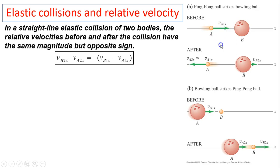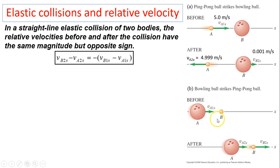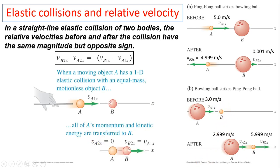Let's revisit the ping pong ball and bowling ball example. Before collision, suppose the ping pong ball moves at 5 m/s. After, it comes back at almost 5 m/s, and the bowling ball moves at a very small velocity. Relative velocity before is 5 relative to B; after, A moves to the left at approximately 5, so 4.999 plus 0.001 equals 5 — the relative velocity after is the same magnitude. If the bowling ball strikes the ping pong ball at 3 m/s, the relative velocity is still 3 relative to the ping pong ball. For two equal-mass objects, if the relative velocity before is 10, after it is 10 meters per second in the opposite direction.